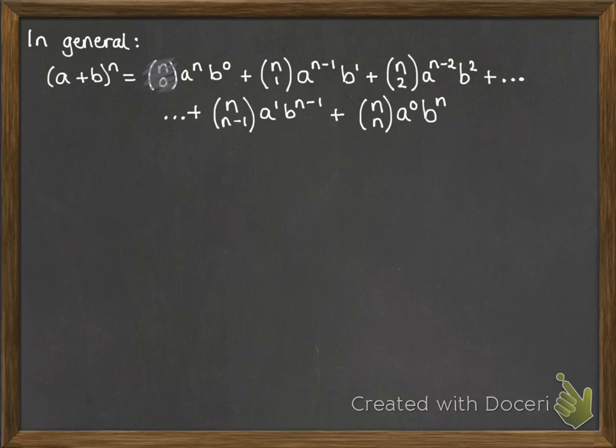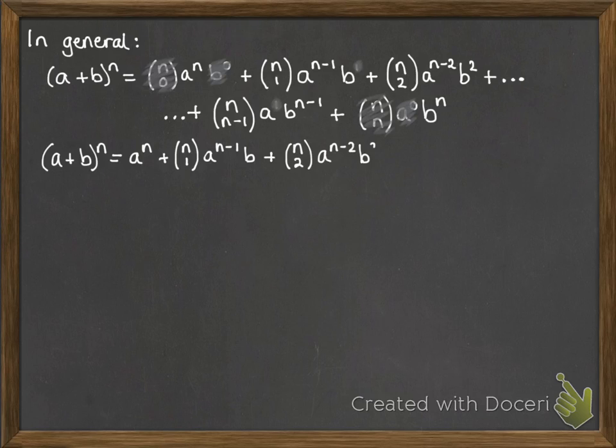Now we can tidy this up just a little bit. The n choose 0, we don't bother writing. That is always 1, same as n choose n at the end. We also don't need anything to the power of 0, so we can blank out those ones as well. And we, of course, wouldn't write to the power of 1 either. Okay, so tidying that up, we get the following. And this is how it looks on your formula sheet. So now let's have a practice of using it. It's actually much easier to use it than write it in general terms.